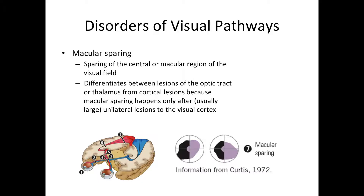Macular sparing of the central visual field helps differentiate lesions of the optic tract or thalamus from cortical lesions, because macular sparing occurs only after large unilateral lesions of the visual cortex. It does not always happen — most often people with visual cortex lesions have complete loss of vision in one quadrant (quadrantanopia) or lose vision in one half of their visual field (hemianopia).